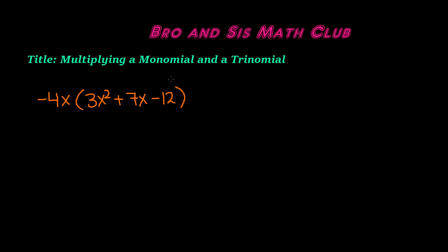A monomial is a real number, a variable, or a product of a real number and one or more variables with whole number exponents. Here we have our monomial, which is negative 4x. This is a product of a real number, which is negative 4, times the variable x. So this is a monomial because it is a single term.